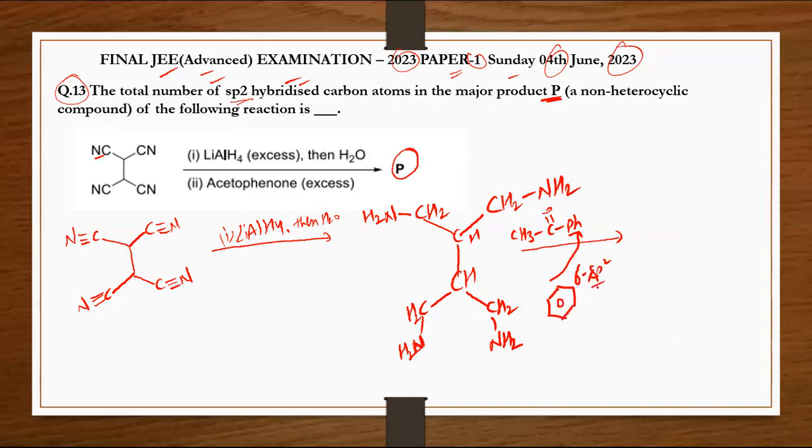So ultimately the structure that will form - let's see what structure will form. One end has a phenyl group, carbon, here comes methyl.